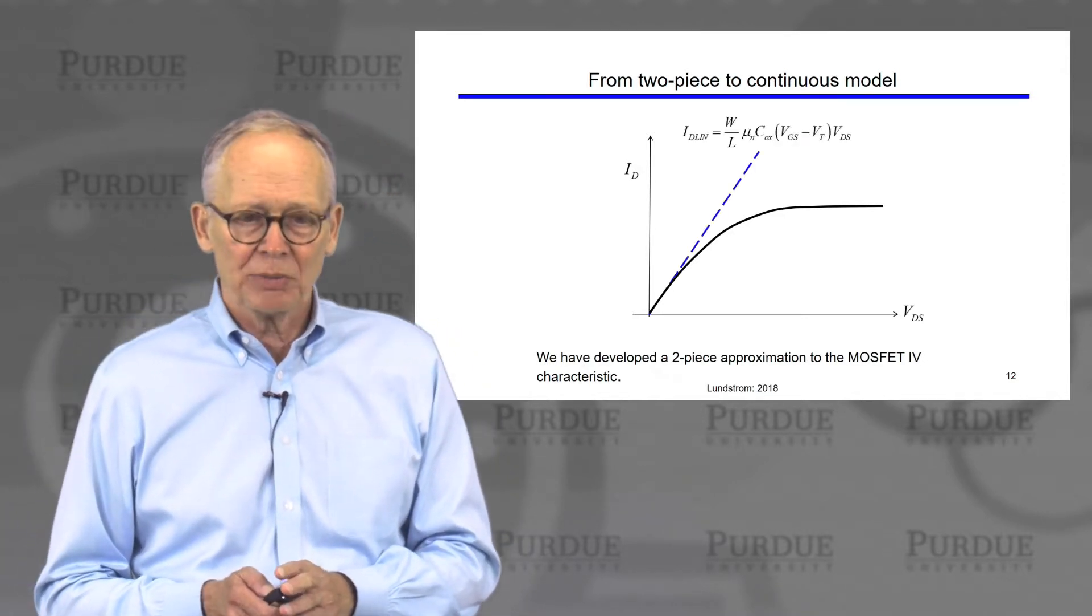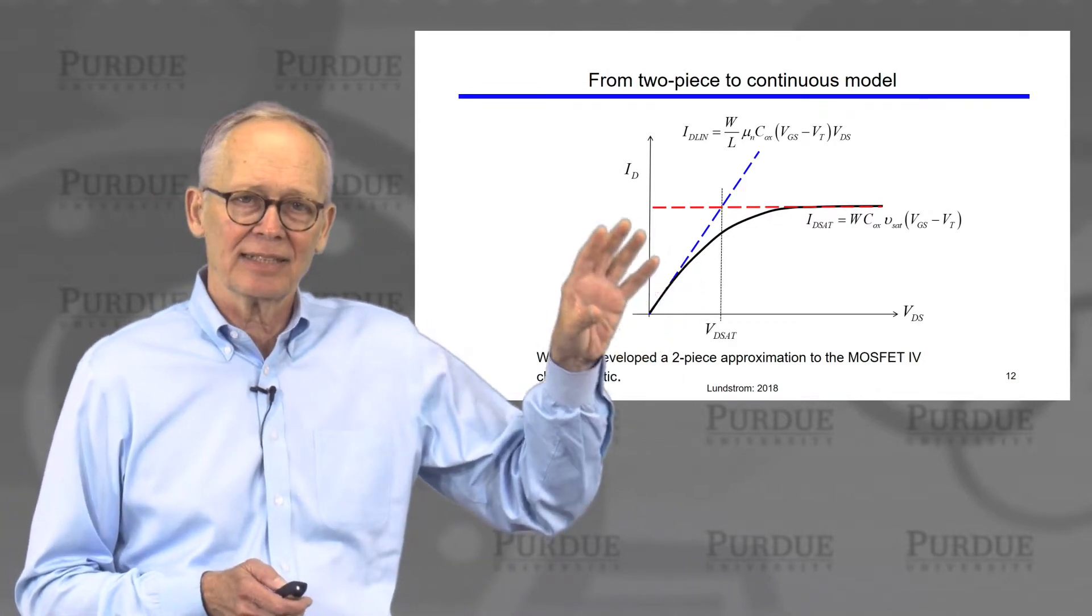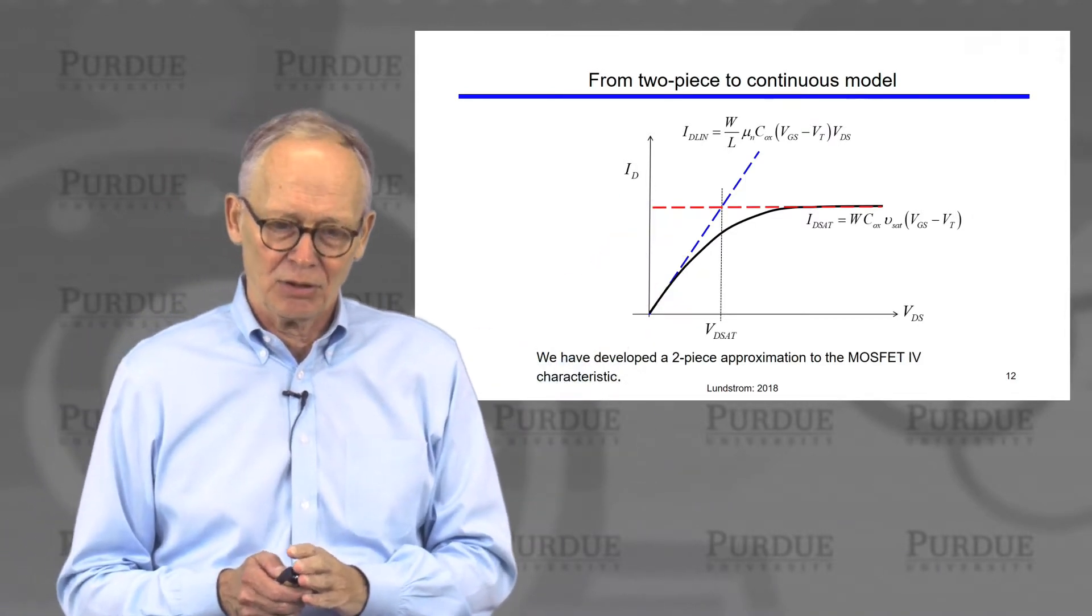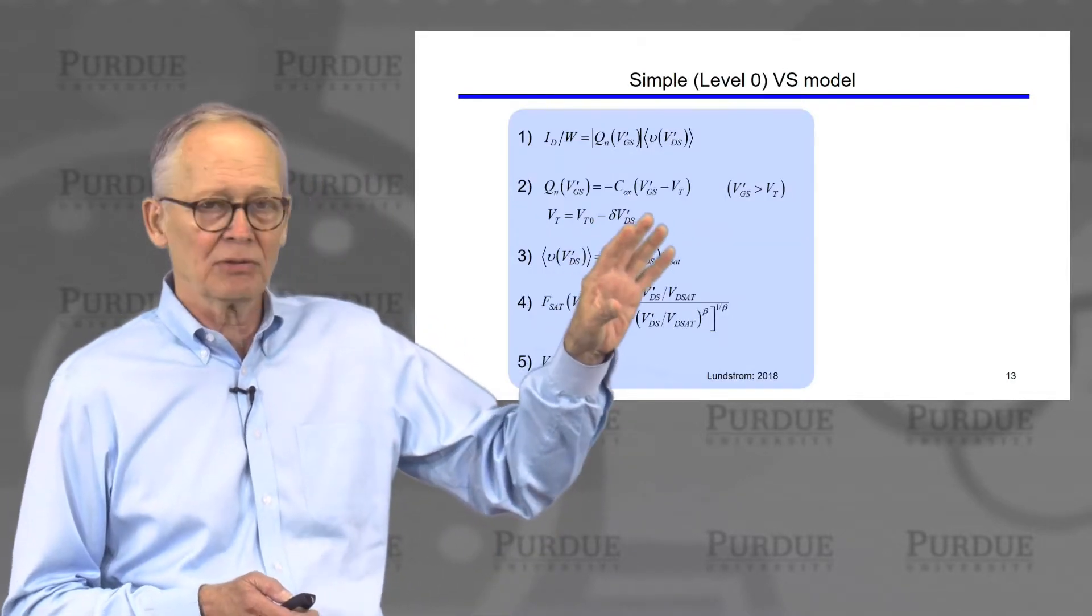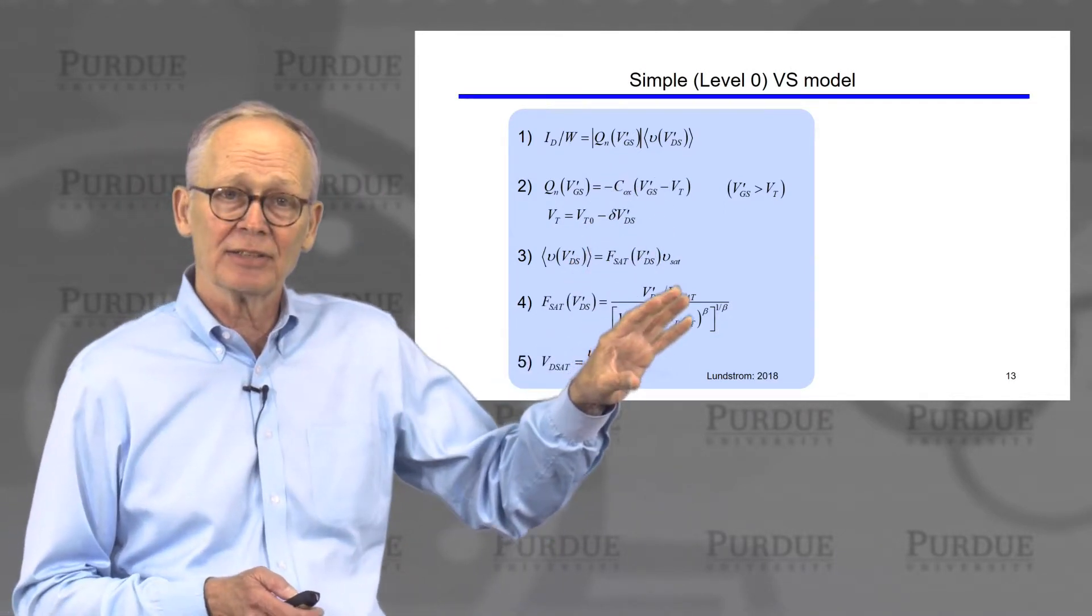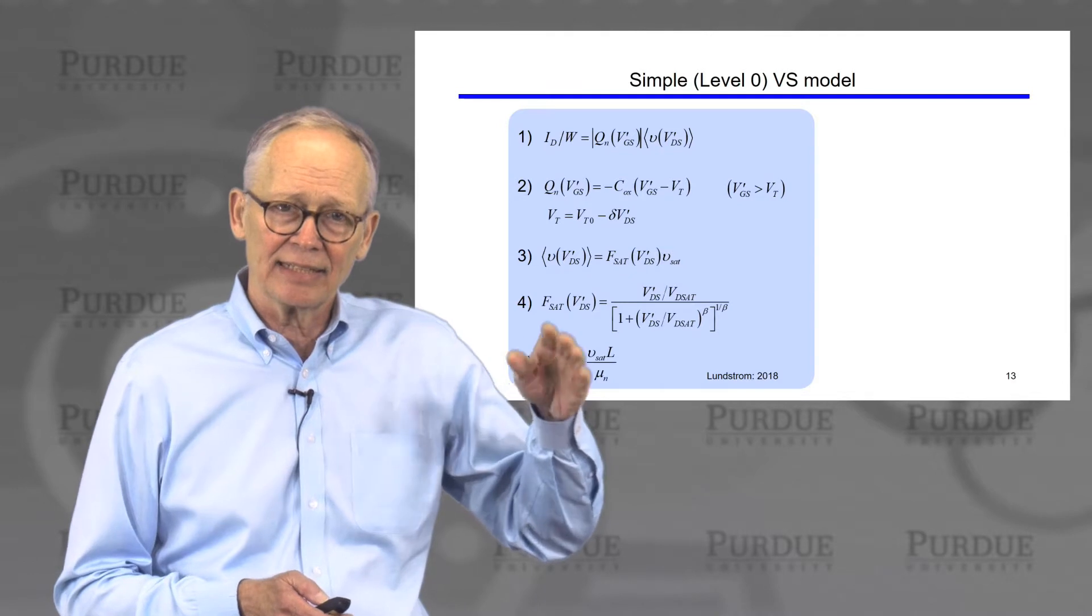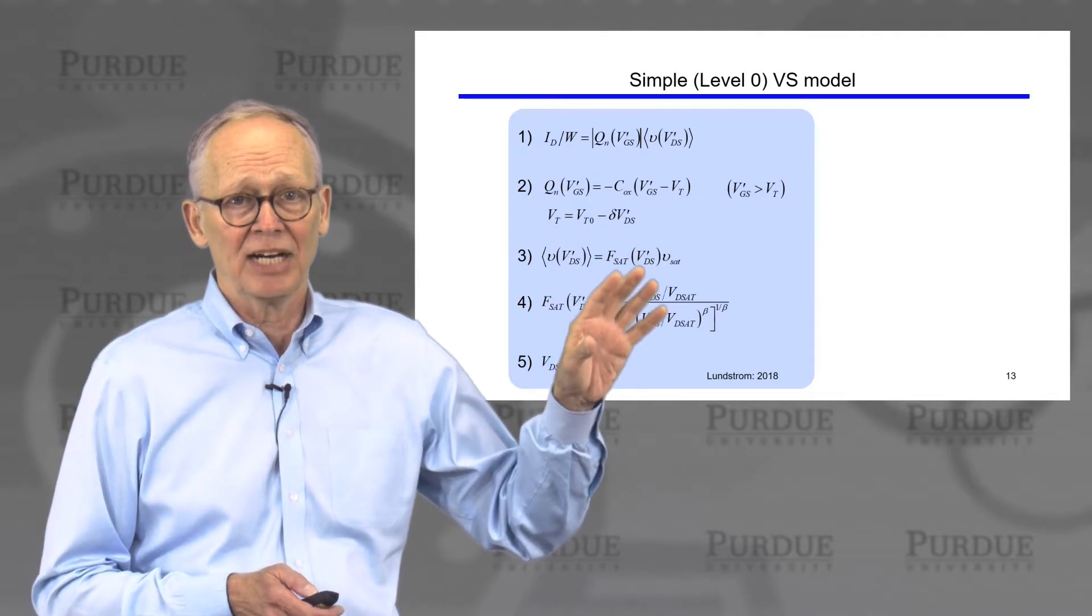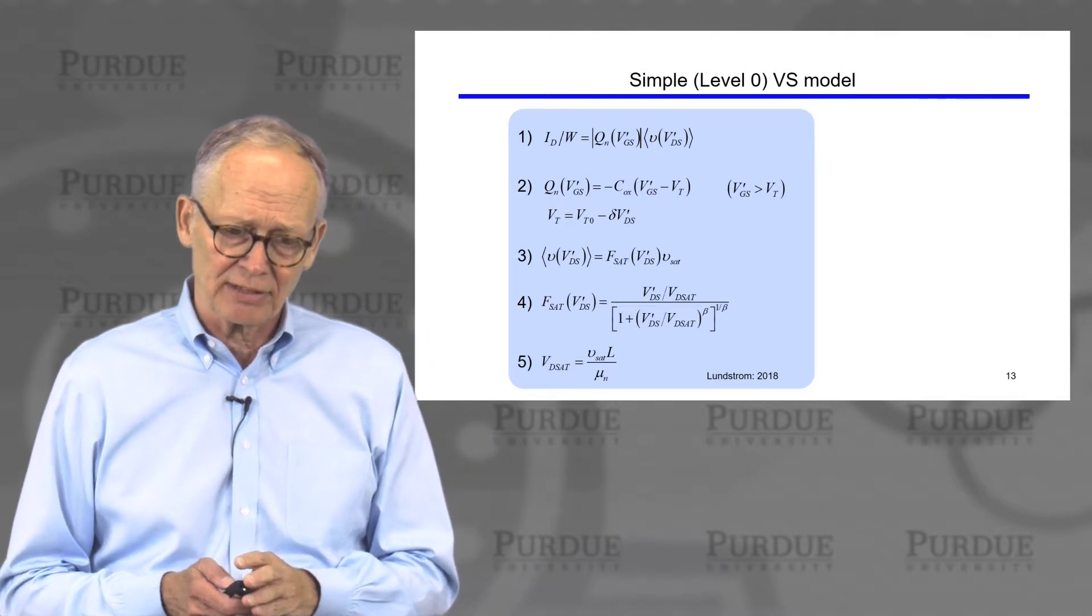We have developed a two-piece model. The next step was to see if we could continuously connect the linear regime to the saturation regime so that we have a smooth model that goes between all regimes. We developed a way to do that, and we call it the level zero Vs model. The equations are summarized here. This is a model you're going to see again and again, and we'll make it a little more sophisticated as we learn more about MOSFET physics. By the end of the course, we'll have a model that does a very good job of describing the physics and the measured characteristics of modern transistors with very short channel lengths.